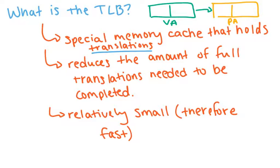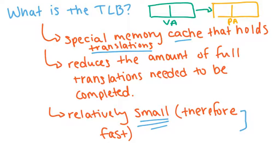You may ask: why don't we just use the CPU cache to hold these translations? Well, we could, but you don't necessarily want to use the cache for these translations — you want to use the cache for other things. So instead, we introduce a new one, and we want to make sure that it's small — much, much smaller than the CPU cache — because this is going to make it really fast to do the lookup.